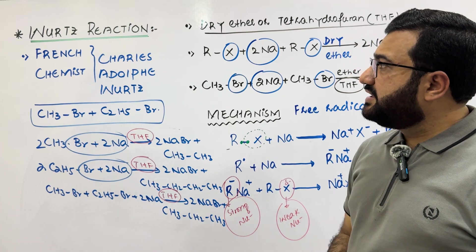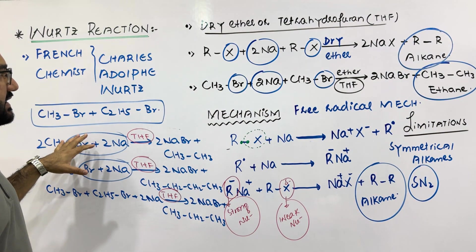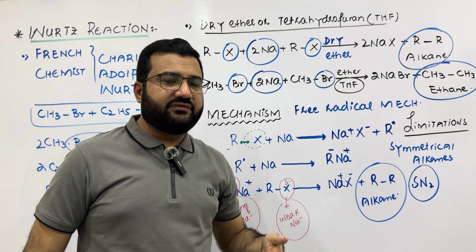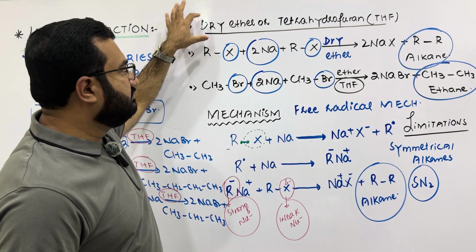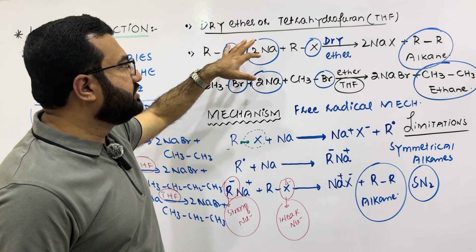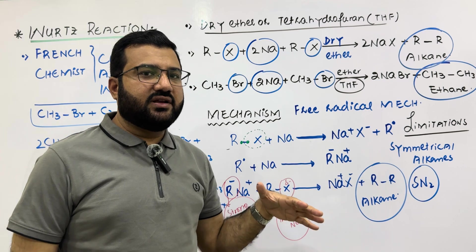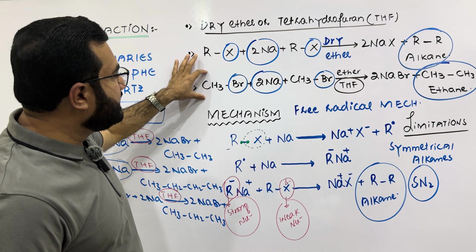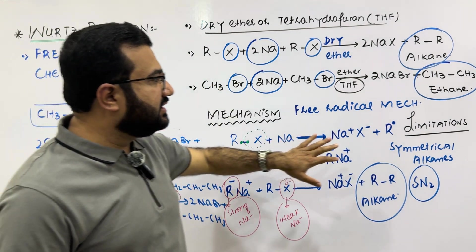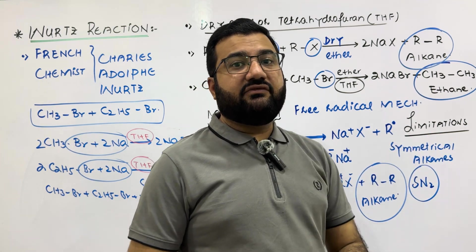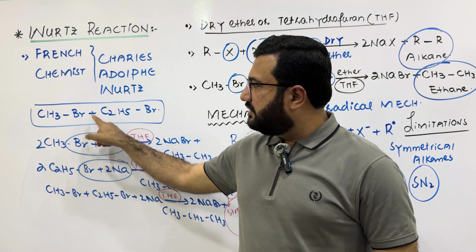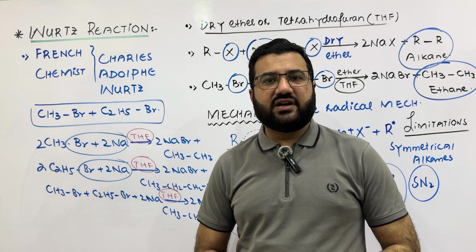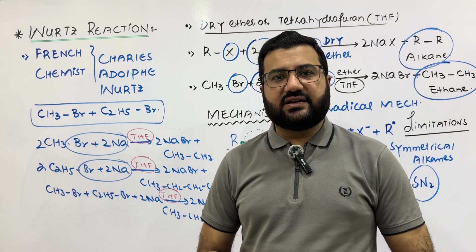So this was all about the Wurtz reaction — its introduction, what type of reaction it is, that it is a coupling reaction taking place in the presence of metal catalysts, which metals can be used, that the environment should be inert using dry ether or tetrahydrofuran, the general reaction and an example, the mechanism, the limitations, and what happens when using a mixture of two different alkyl halides. In case you find any problem, ask in the comment section and I will answer. Till then, take care.